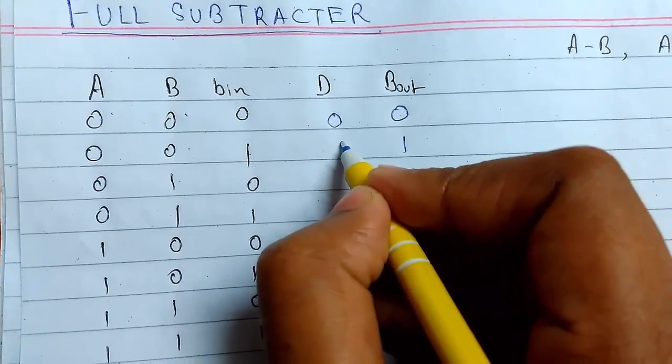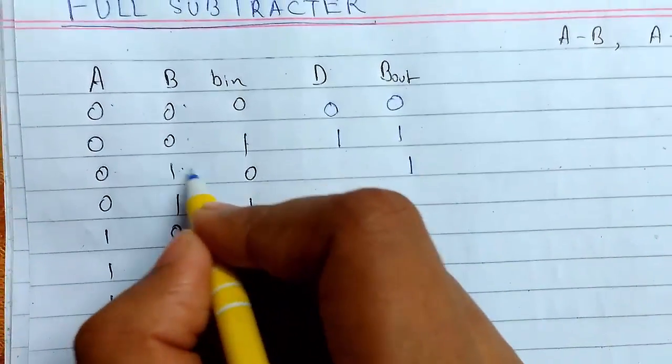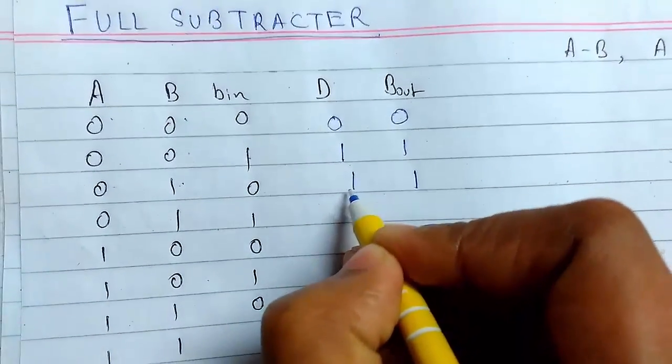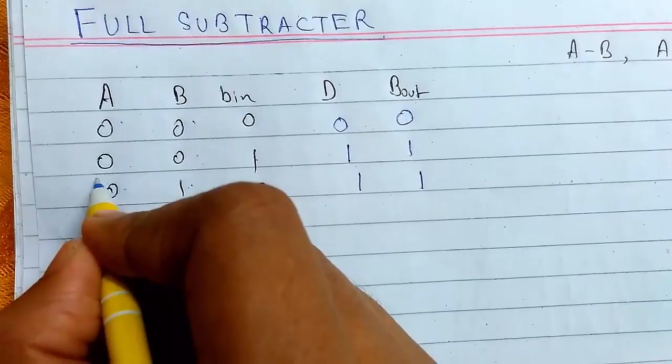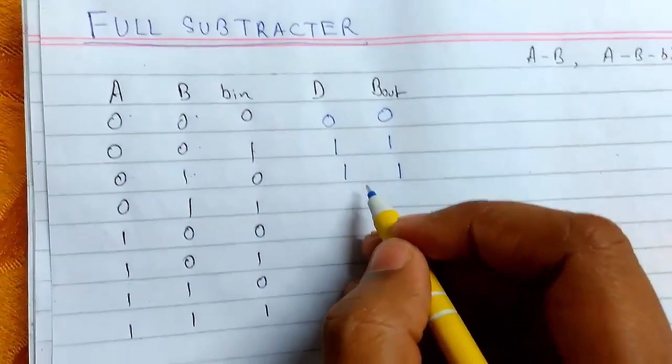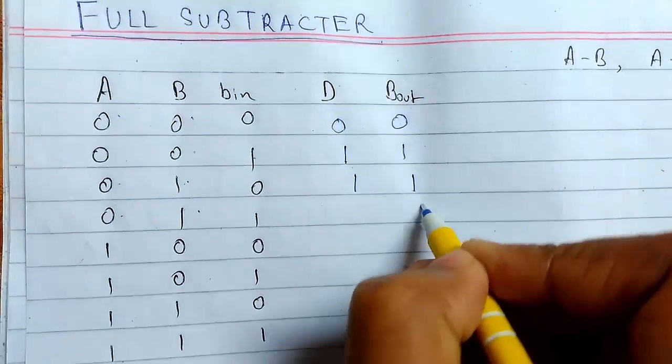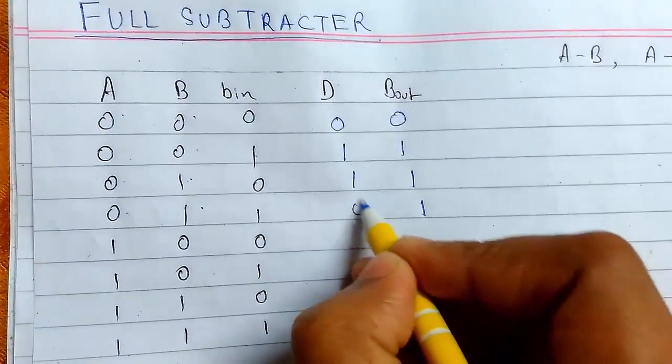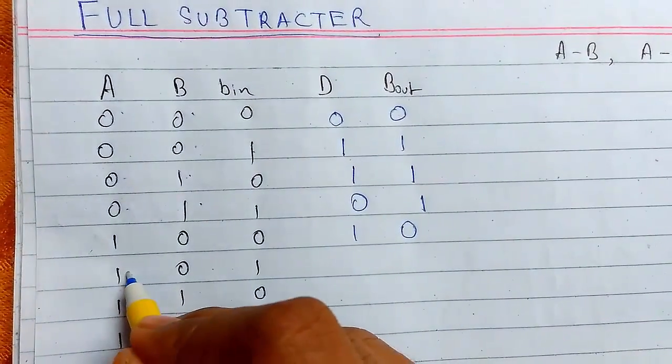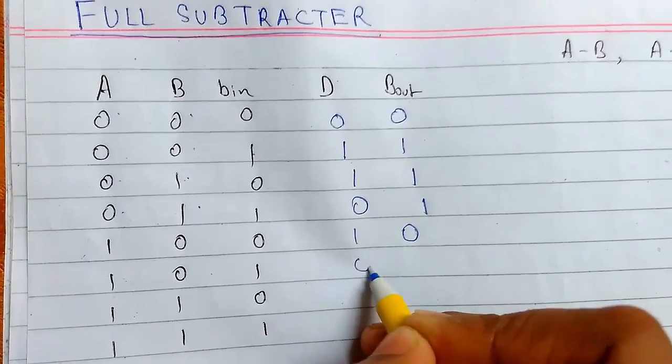Then 10 minus 1 is 1. For 0 minus 1, we need to borrow, and this will again be 10 minus 1 is 1. So this will be 10 minus 1 is 1, and 1 minus 0 is 1.